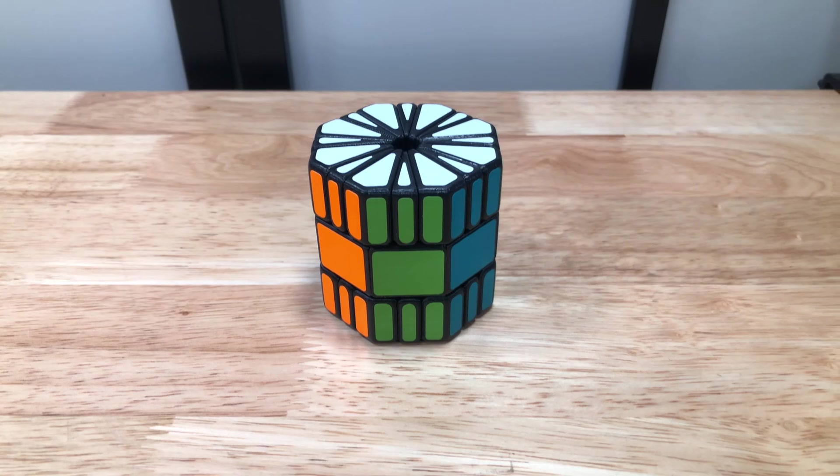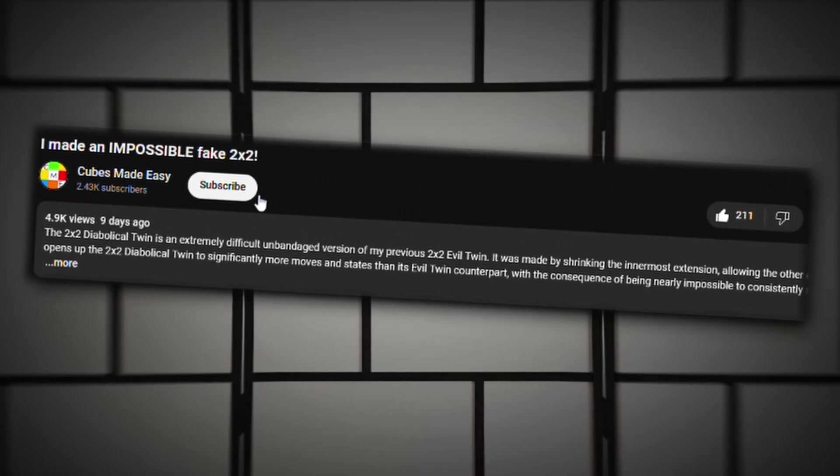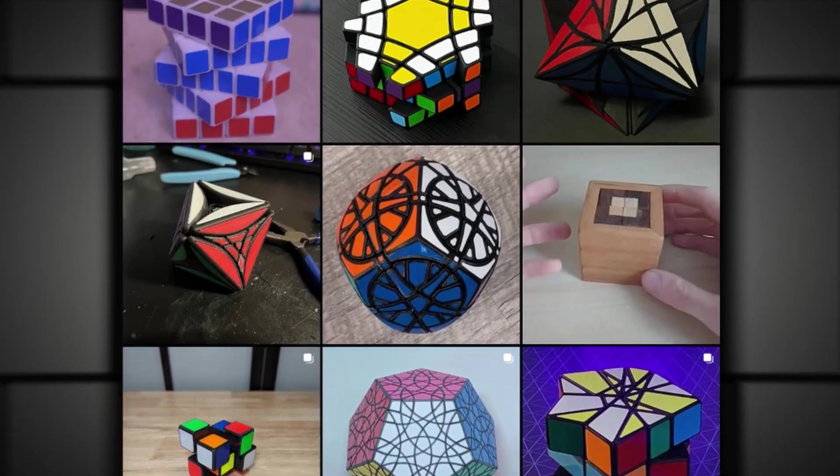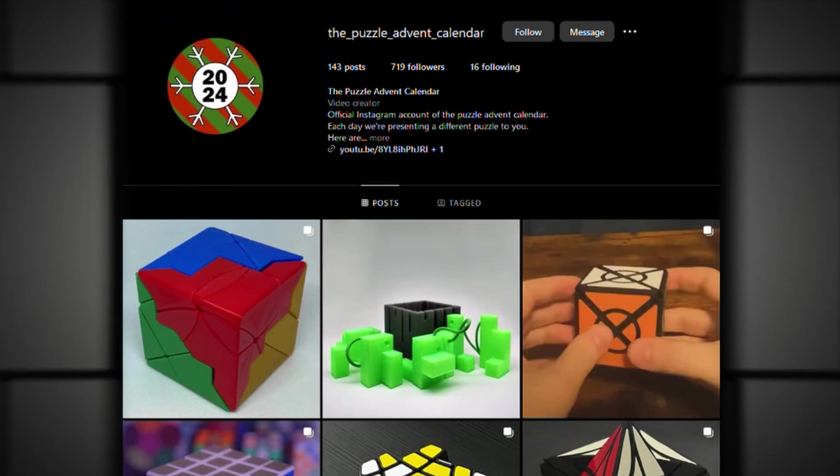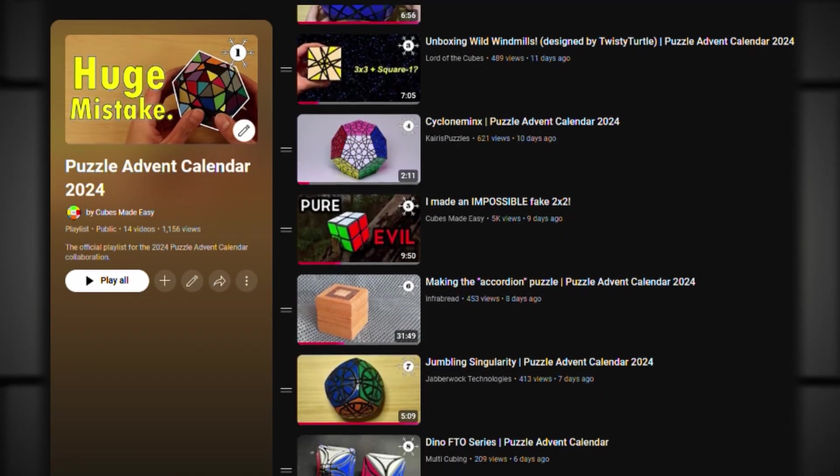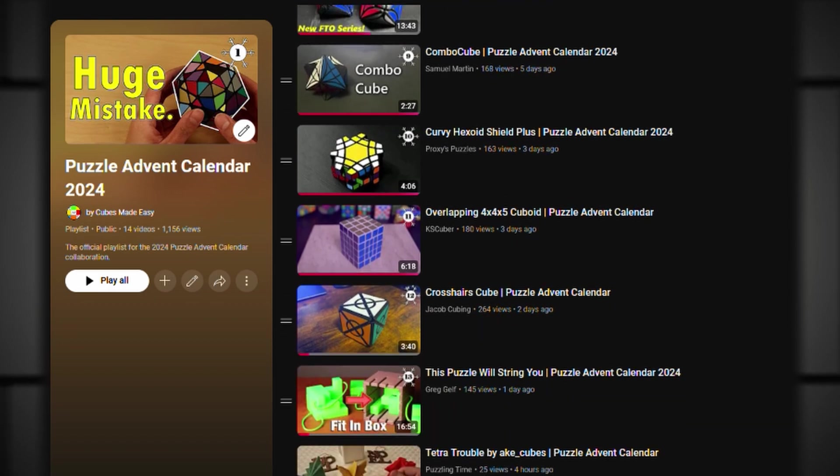That aside, let's get into designing the Octagon-1. If you want to keep seeing unique new puzzles from me, like and subscribe. If you want to see 23 other never-before-seen puzzles, check out the puzzle advent calendar playlist in the description. The Octagon-1 is the 15th out of 24 puzzles in this year's daily series.